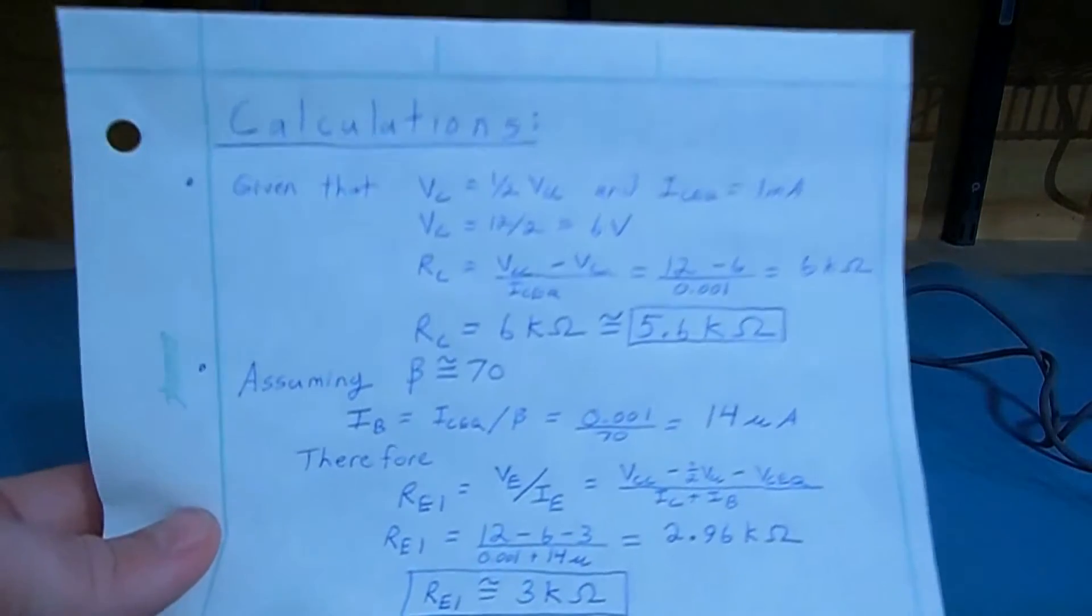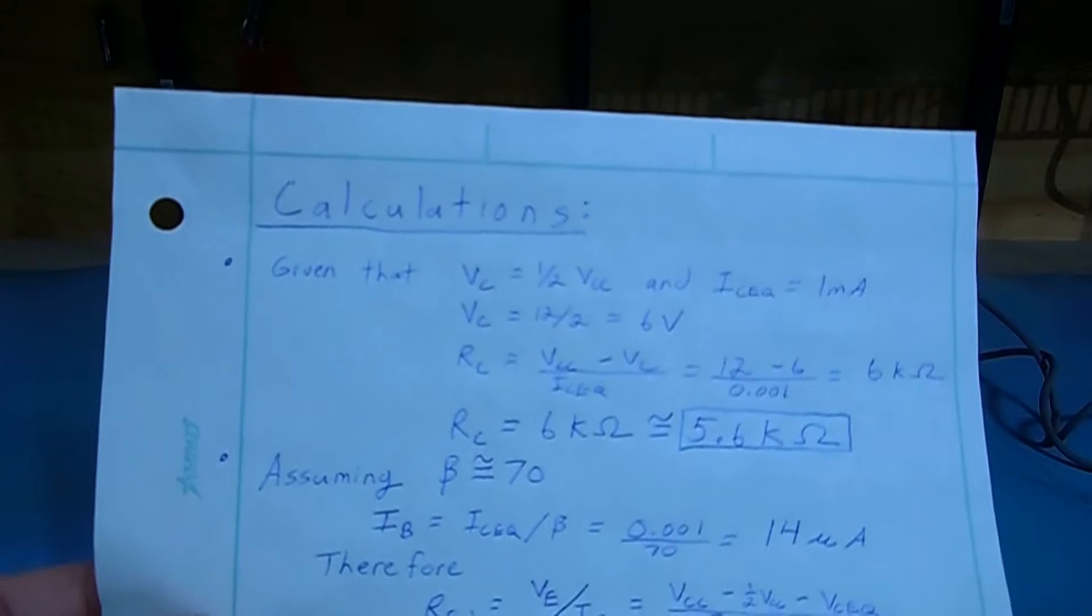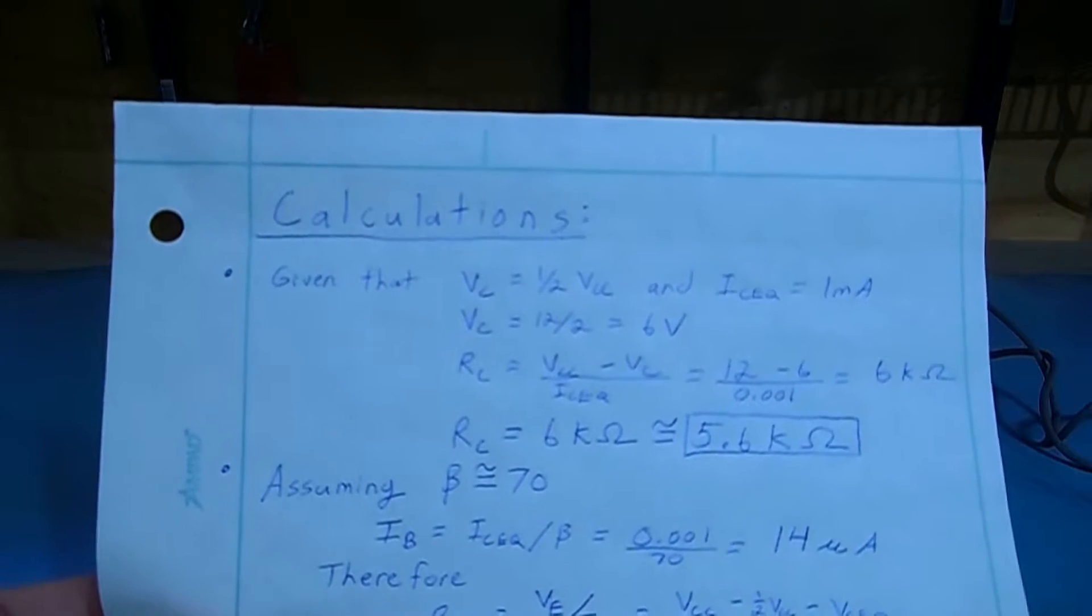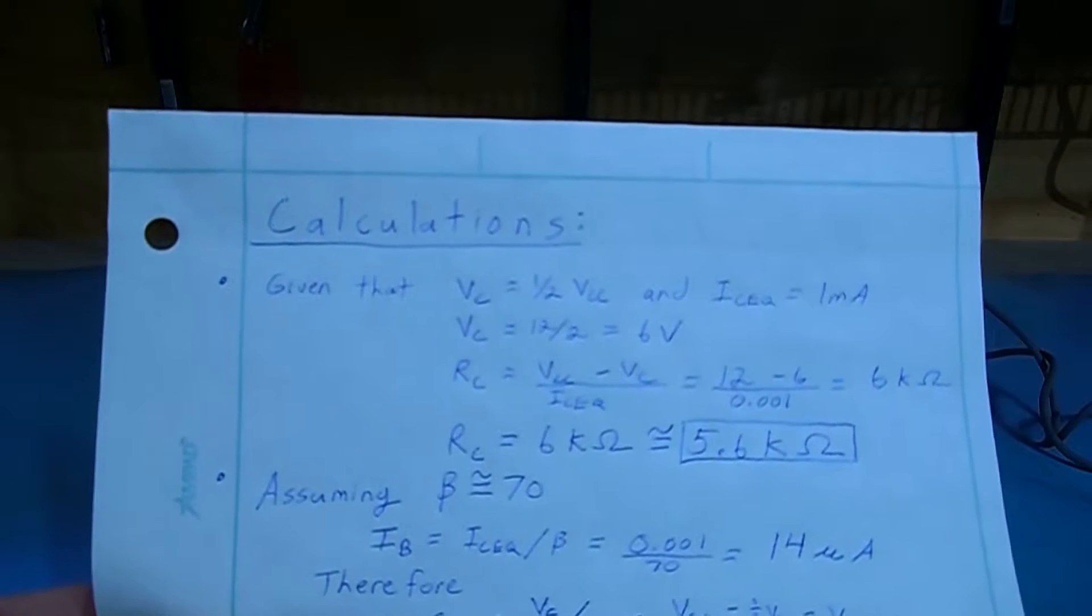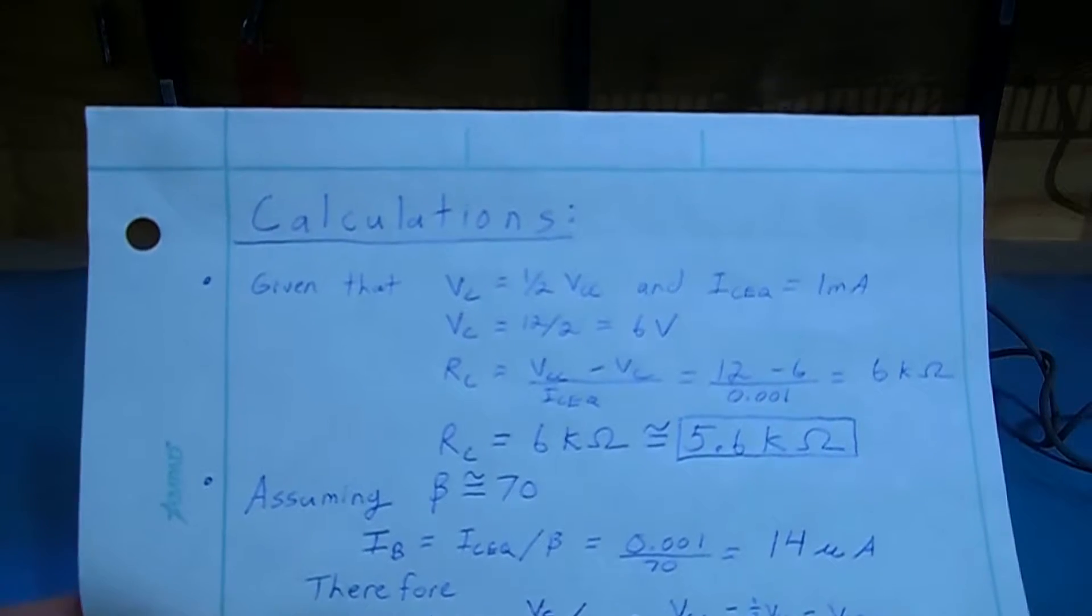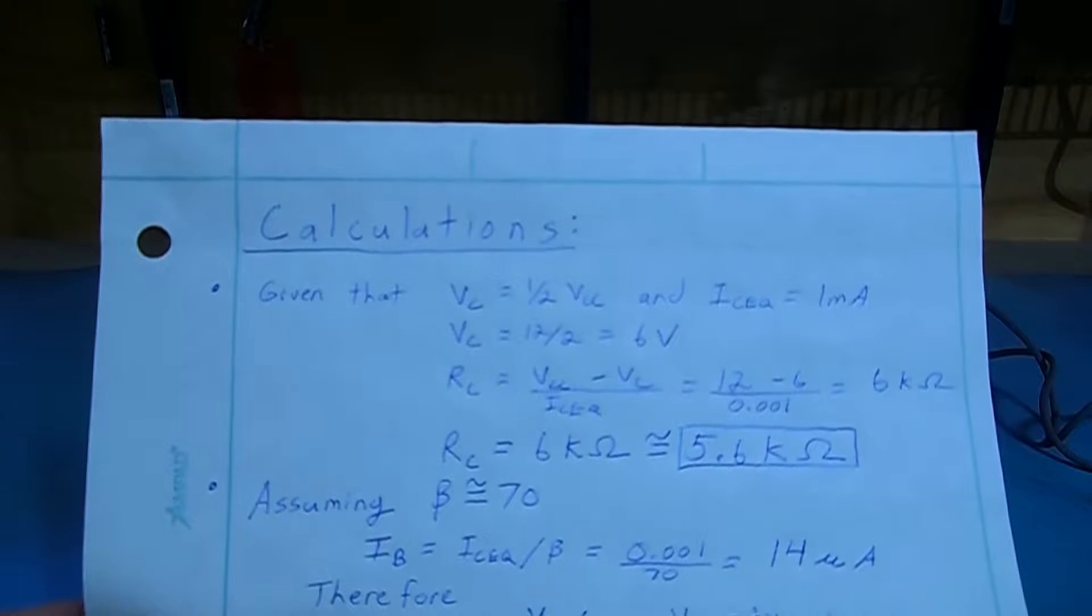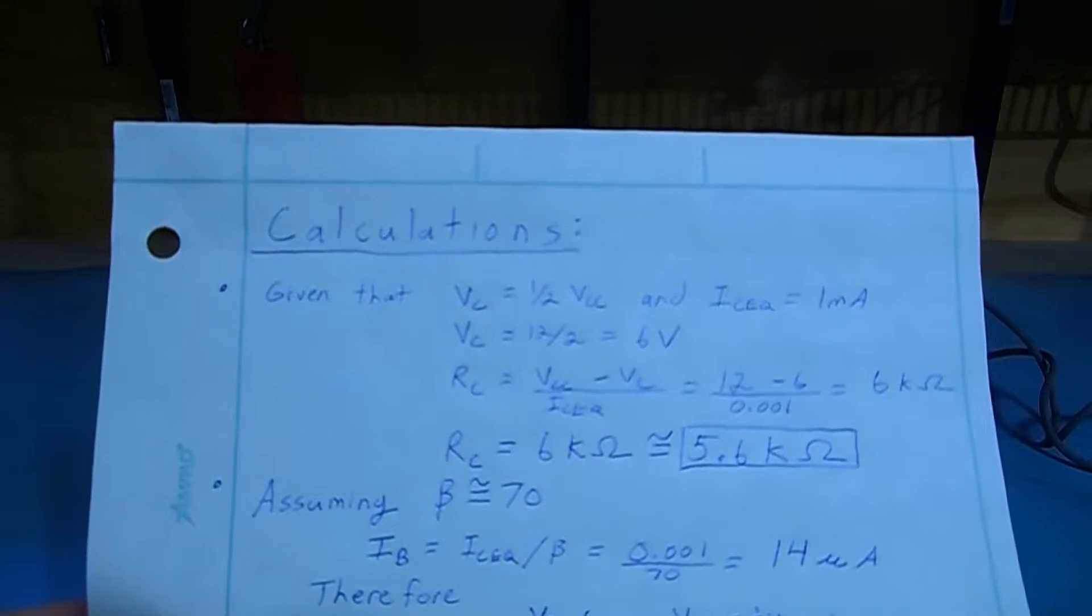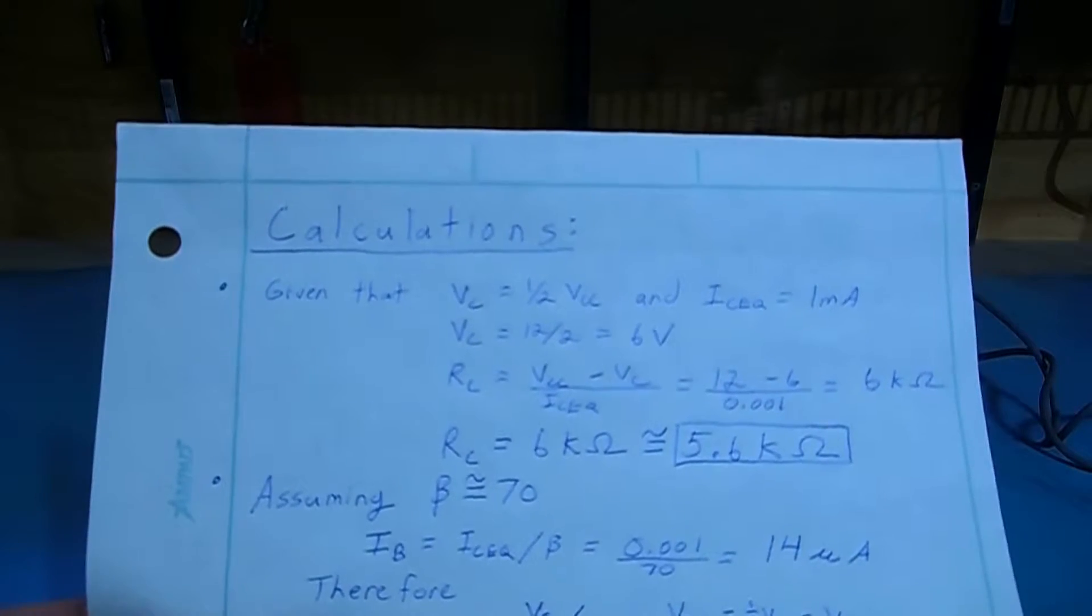Using our value for collector voltage and collector current, we can now calculate the value for RC. So we take 12 volts minus 6 volts at the collector terminal, and divide that by 1 milliamp through the collector resistor, we get 6,000 ohms, and the nearest value is 5.6k.